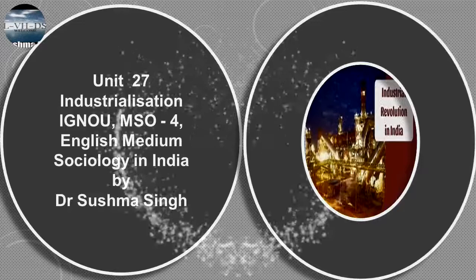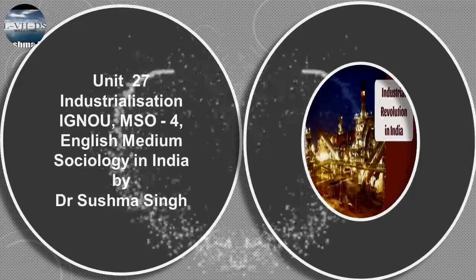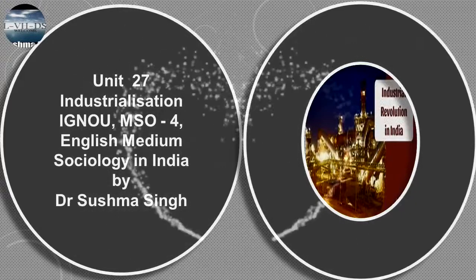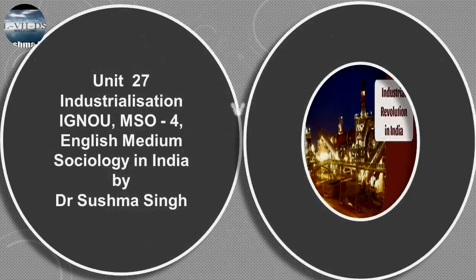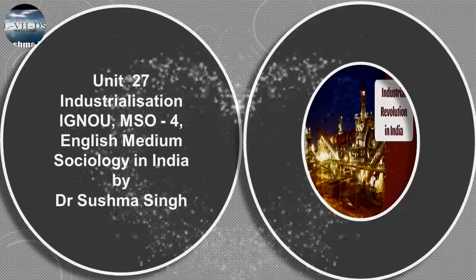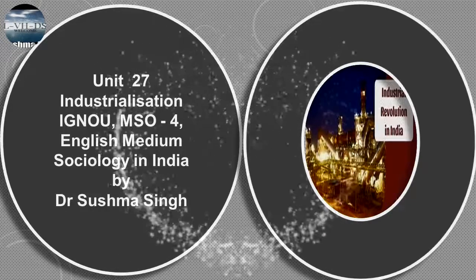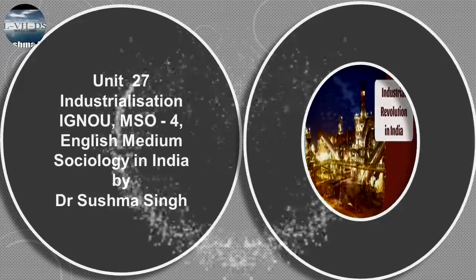Marx believed that surplus value appropriated from labor is the source of profit. In essence, the working class is exploited for its labor. The wages they earn are enough to keep them at subsistence level, because wage workers sell their labor power to earn a living and the capitalists own the labor process. The product of the workers' labor is alien to the wage workers — it is not his or her product but the product of the capitalist. Marx calls this separation of the labor process from oneself as alienation. Alienation, Marx says, is a feature of industrial capitalist society. Workers are alienated in several distinct ways.